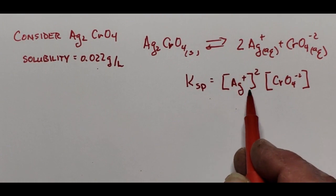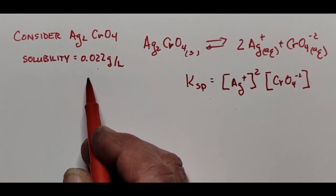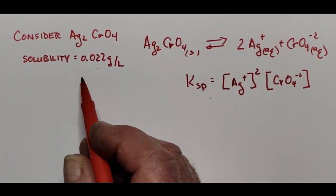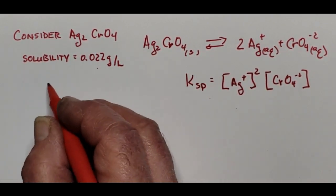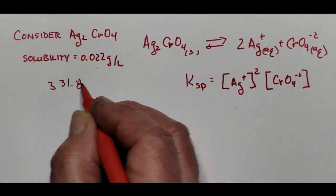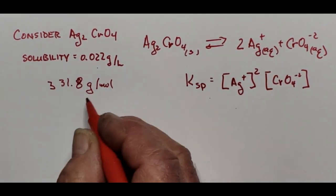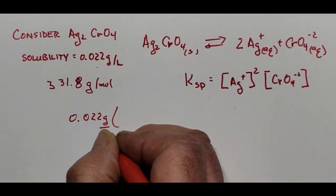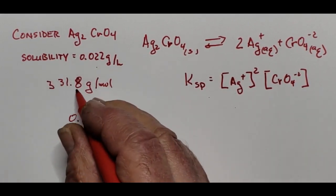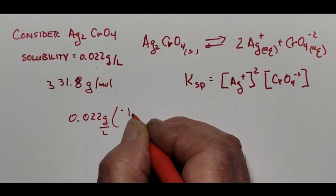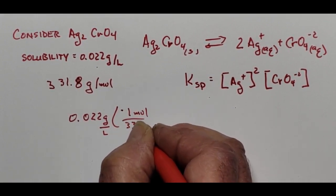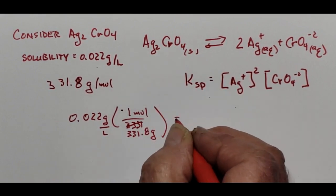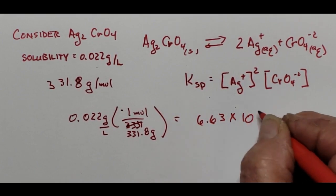These brackets represent moles per liter, and we were given the solubility in grams per liter. The molecular weight of silver chromate is 331.8 grams per mole. We can calculate its solubility in moles per liter by taking 0.022 grams per liter divided by 331.8 grams per mole, which comes out to 6.63 × 10⁻⁵ moles per liter.